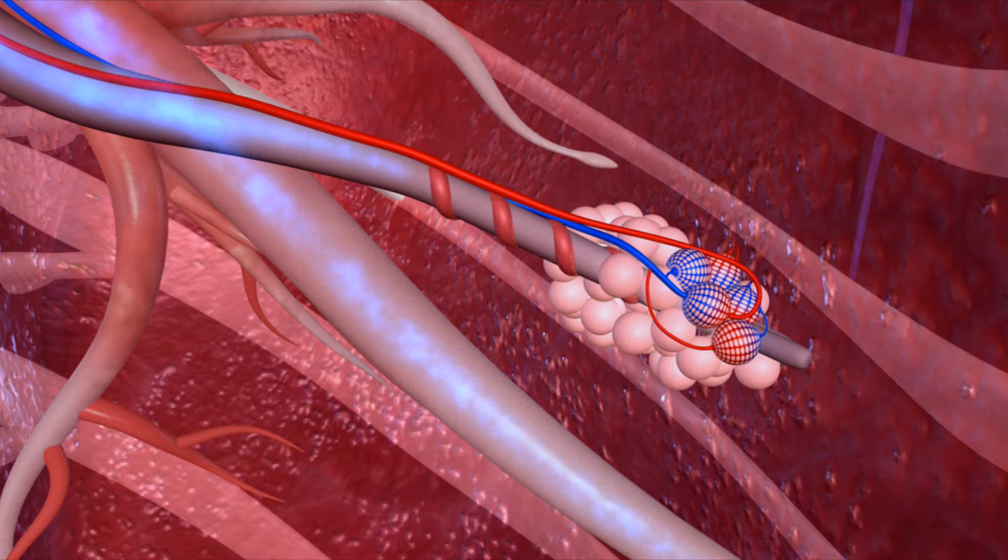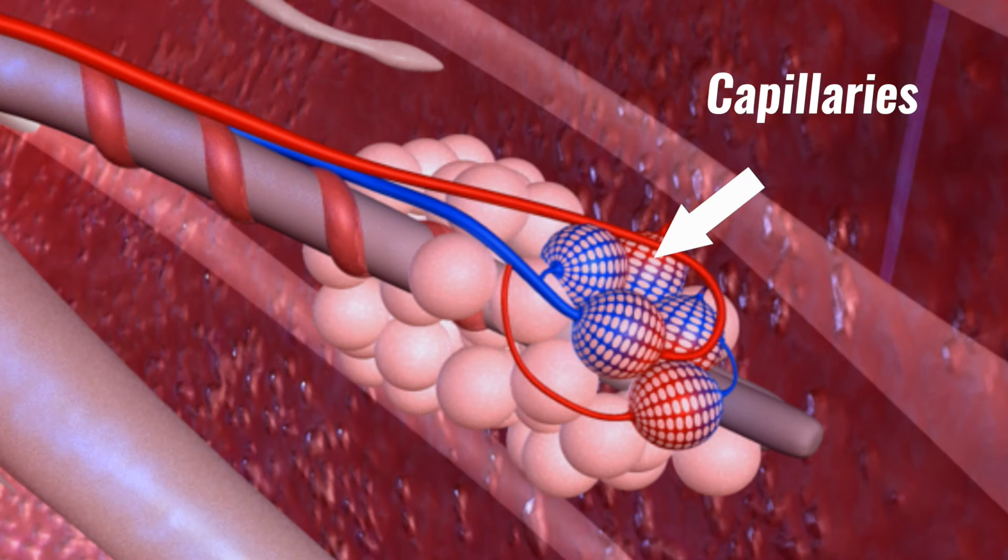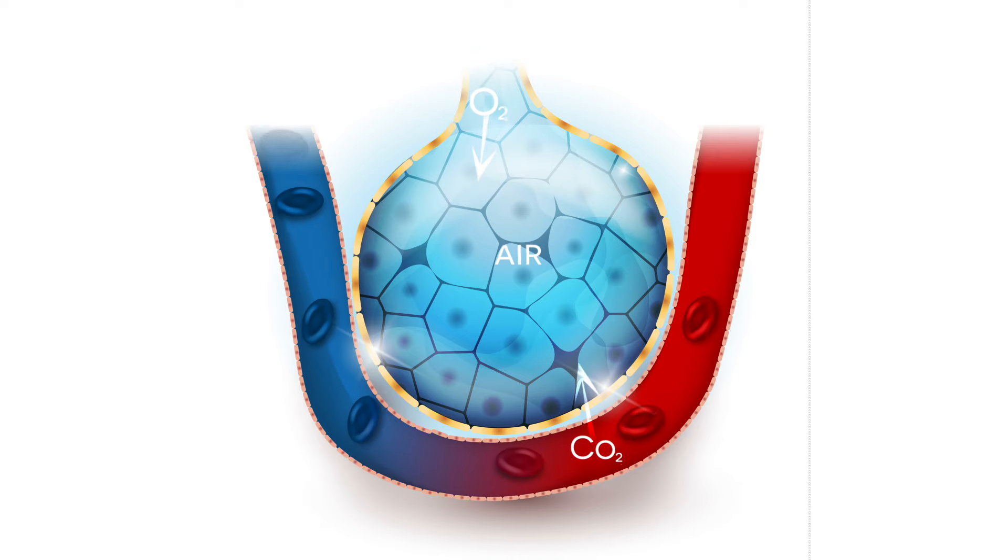A network of small blood vessels called capillaries, into which the inspired gases pass, surrounds the alveoli. Diffusion occurs when molecules move from an area of high concentration to an area of low concentration.